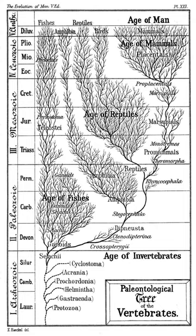The Modern Evolutionary Synthesis was the outcome of a merger of several different scientific fields to produce a more cohesive understanding of evolutionary theory. In the 1920s, R.A. Fisher, J.B.S. Haldane, and Sewell Wright combined Darwin's theory of natural selection with statistical models of Mendelian genetics, founding the discipline of population genetics.